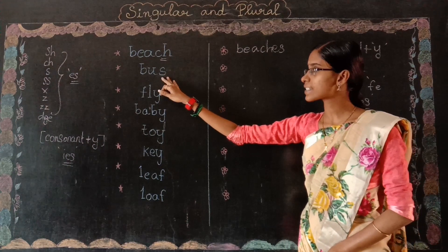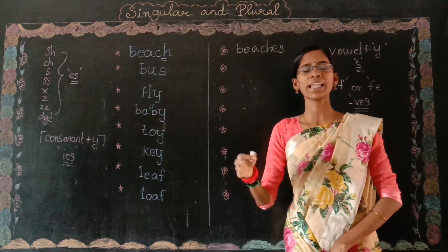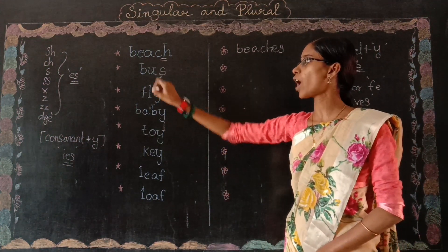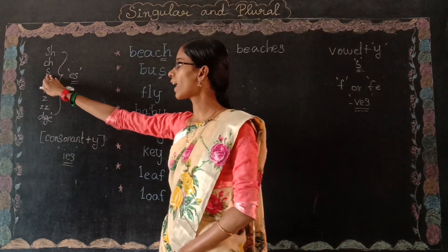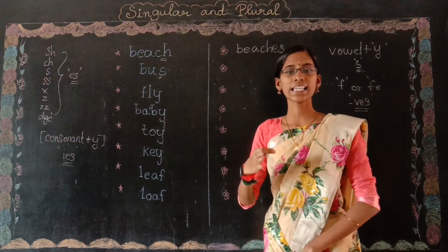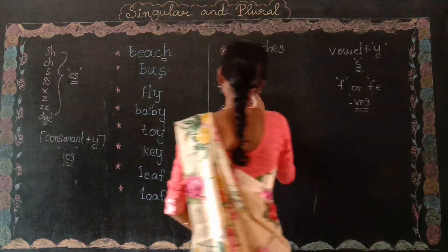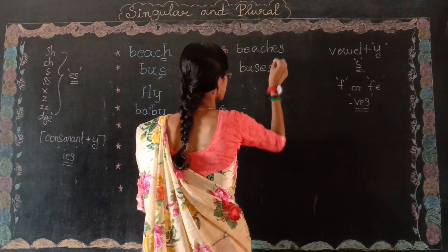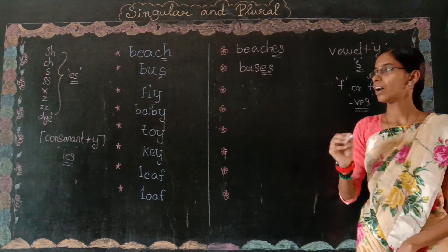The second example word is 'bus.' We often travel by bus. This word ends with S, so according to our first rule you have to add ES. Bus plus ES gives us 'buses.' So bus is a singular word and buses is the plural word.